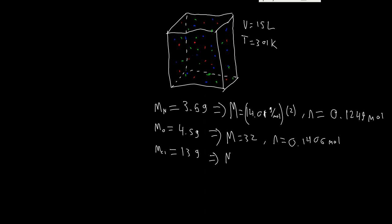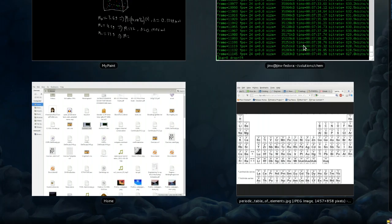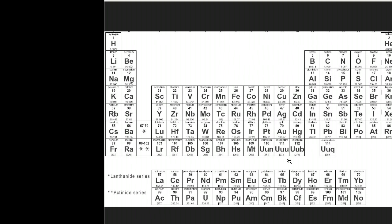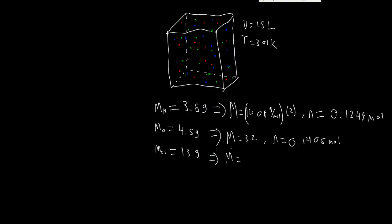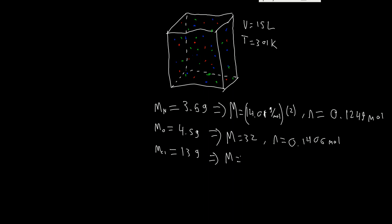And, chlorine, molecular mass equals, I don't know this one, so molecular mass 35.45, these are grams per mole. Number of moles, 13 grams, divided by 35.45 times 2.